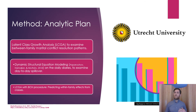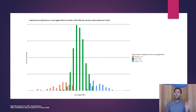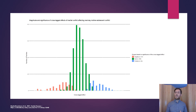We applied a series of techniques in the structural equation modeling framework, including latent class growth analysis and dynamic structural equation modeling. The main finding was that we found significant heterogeneity. For most families, as shown in the graph, there was a null, non-significant effect between day-one marital conflict and day-two parent-child conflict, whereas for a reasonable number of families there was either a positive or negative association.